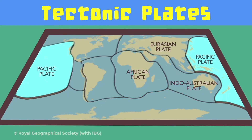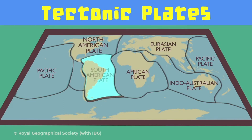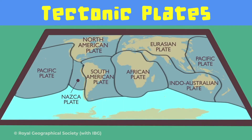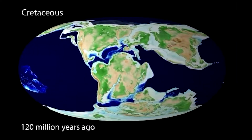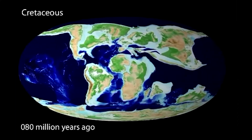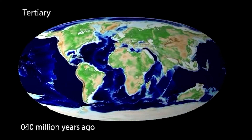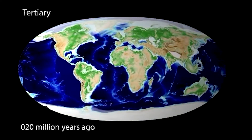There are seven main tectonic plates that cover the Earth and then some microplates of varying sizes. These tectonic plates are huge, heavy, and constantly moving, but very, very slowly. They move by about one to ten centimetres a year. Over long periods of time, the movement of these plates results in big changes on the Earth's crust.